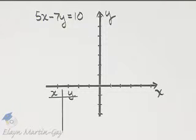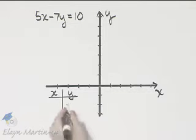How do we graph this linear equation in two variables? Let's find three ordered pair solutions. Let's find intercepts again.